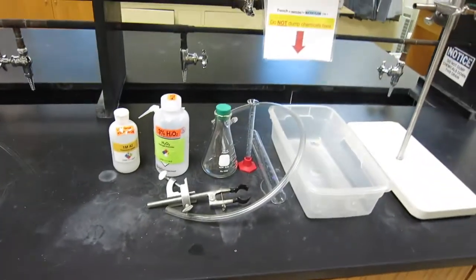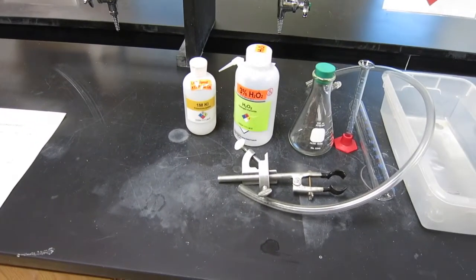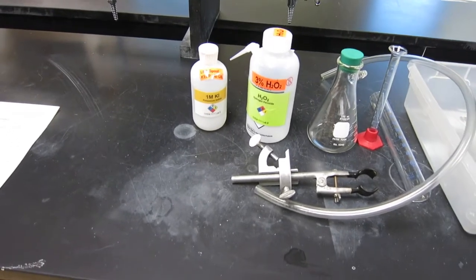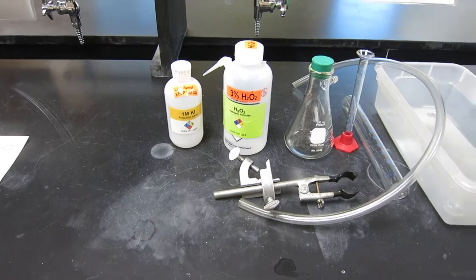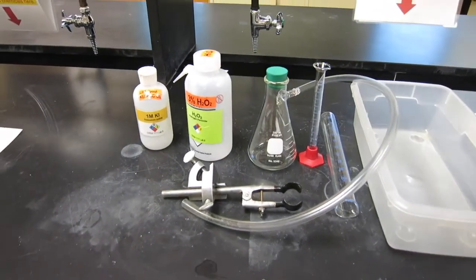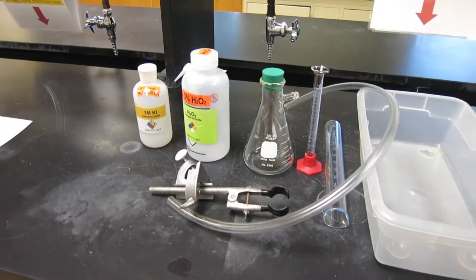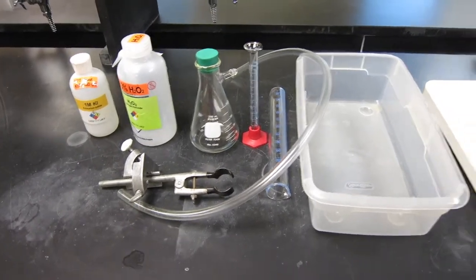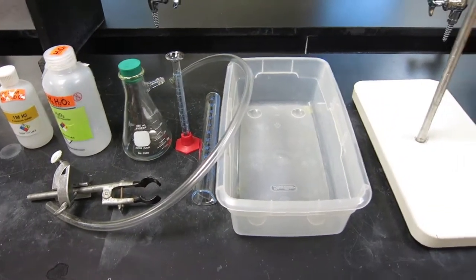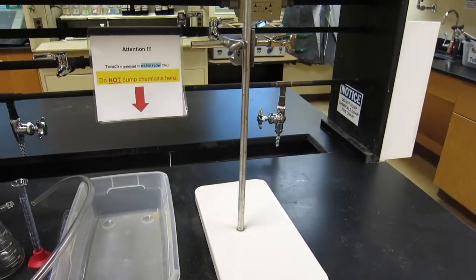This is what the material we need. We need one molar KI, potassium iodide, 3% hydrogen peroxide, side arm flask, graduated cylinder, and a container. And we need a stand with the clamp.